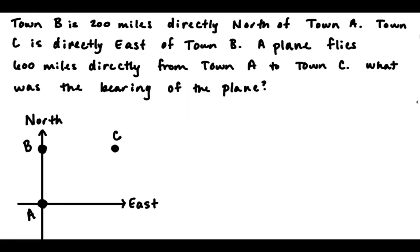A plane flies 600 miles directly from town A to town C. What is the bearing of the plane? So we have town A to town B. We also have a plane going from A to C. And then if we draw the line from B to C, we get a nice little triangle. So that's helpful, because that lets us use trigonometry.